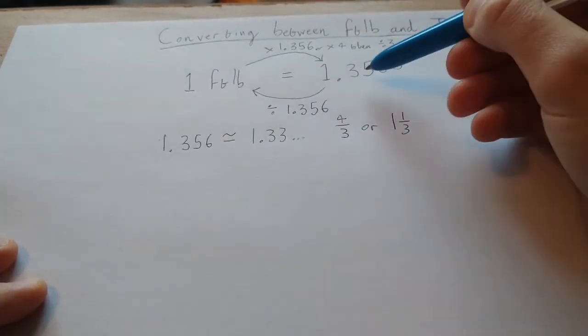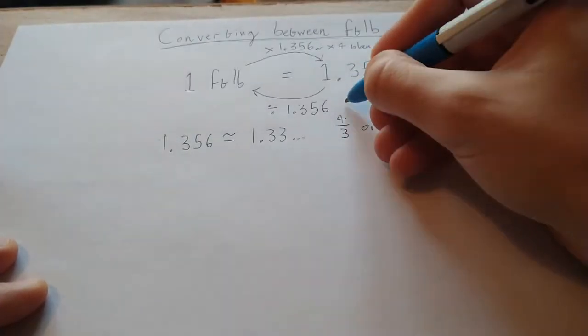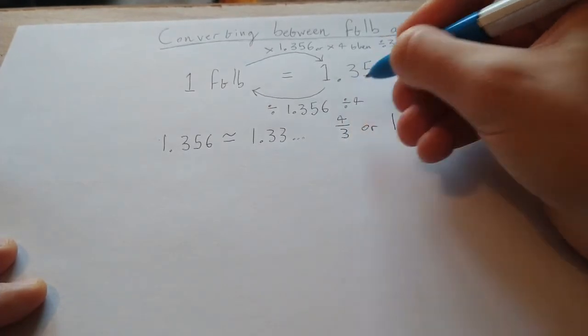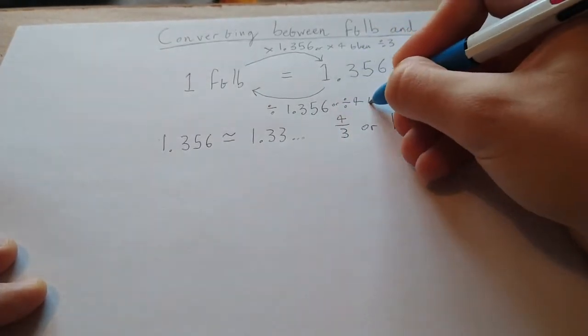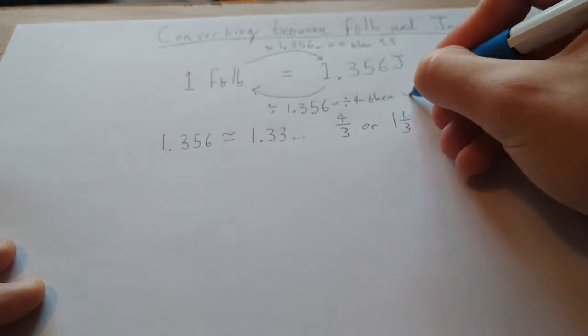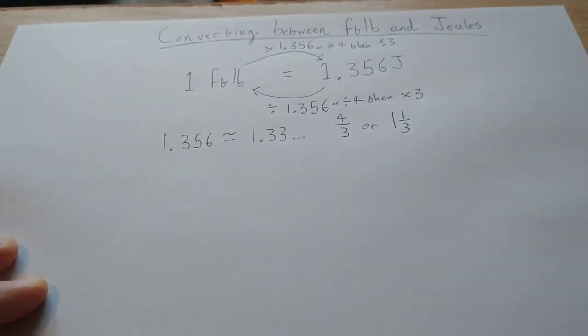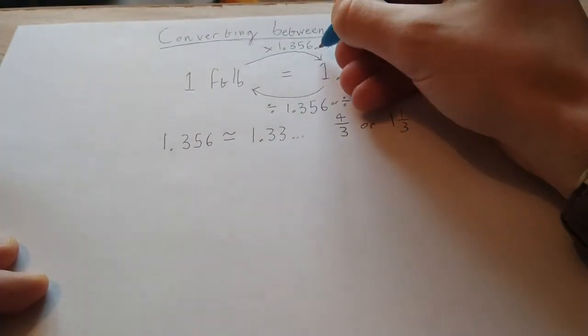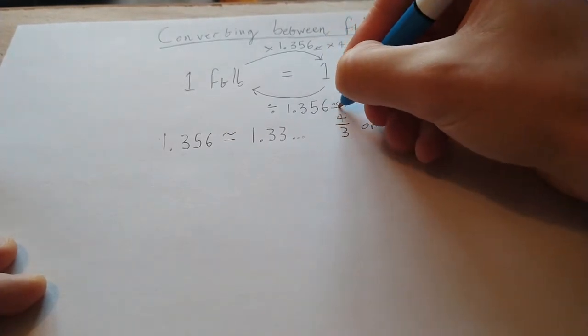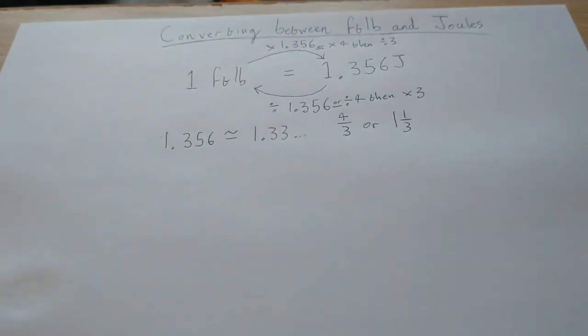And to get from joules to foot pounds you can divide by 4 and then multiply by 3. So that's kind of a cheaty way to give you a quick idea of a value that you've been given in joules that you want in foot pounds, or a value that you've been given in foot pounds but want in joules.